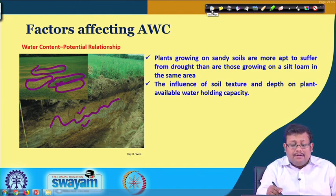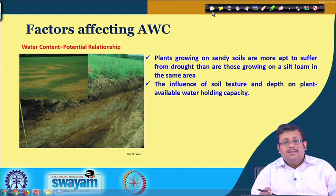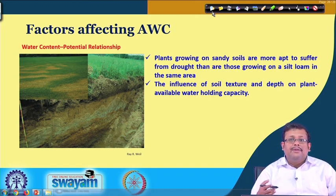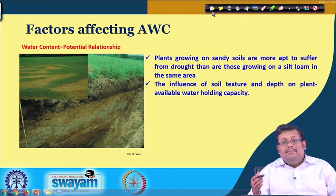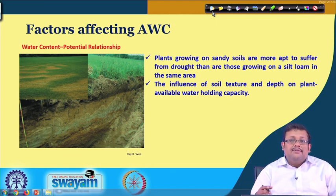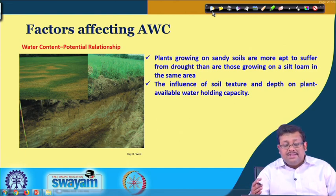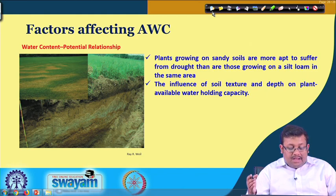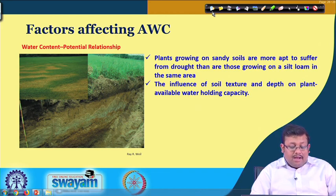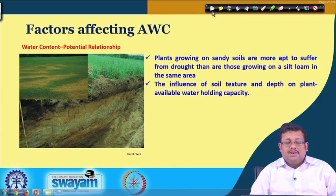We have covered the different stages of soil water content — field capacity, permanent wilting point, hygroscopic coefficient, and their implications for plant growth. In the next lecture we will finish this topic and then start a new topic: soil aeration. Thank you and goodbye — see you in the next lecture of Soil Science and Technology.